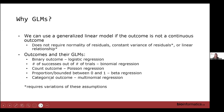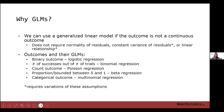We can also have categorical outcomes, where individuals can belong to any number of categories. That would be a multinomial regression, which we won't get into.